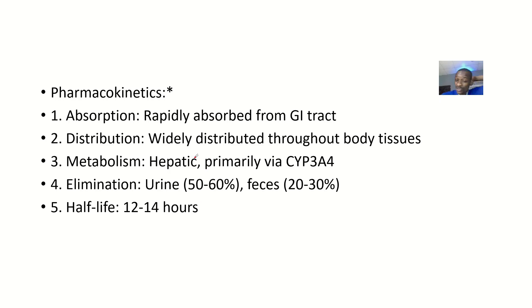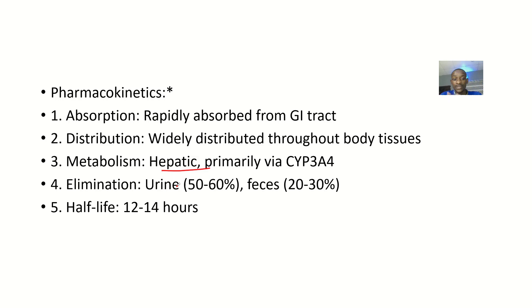Pharmacokinetics: absorption — it is rapidly absorbed in the GI tract. Distribution — it is widely distributed in the body. Metabolism — metabolized in the liver primarily via cytochrome 3A4. Elimination — about 50 to 60 percent is through urine and 20 to 30 percent through feces. Half-life is about 12 to 14 hours in the body.